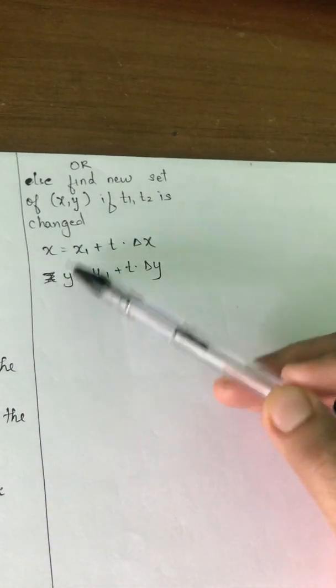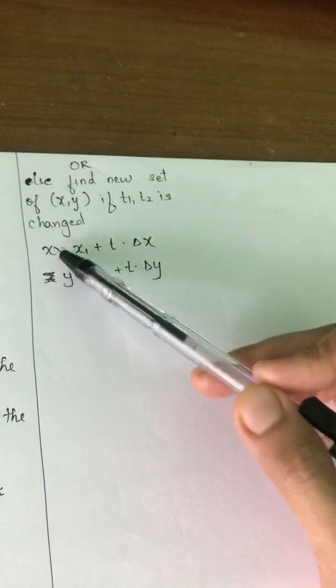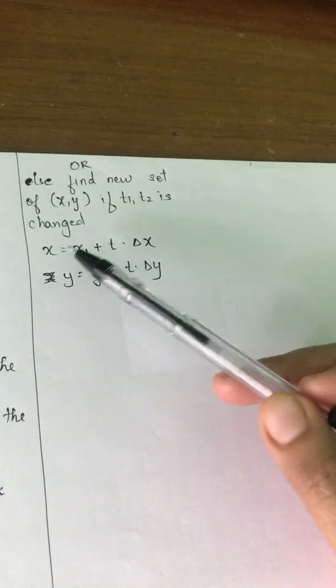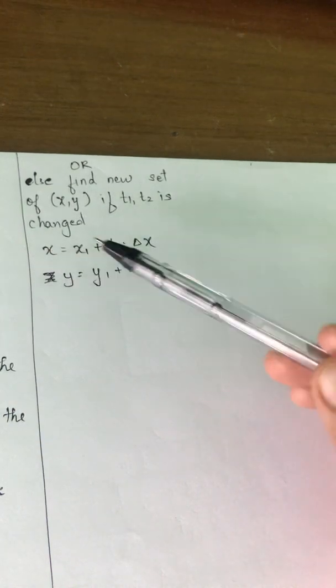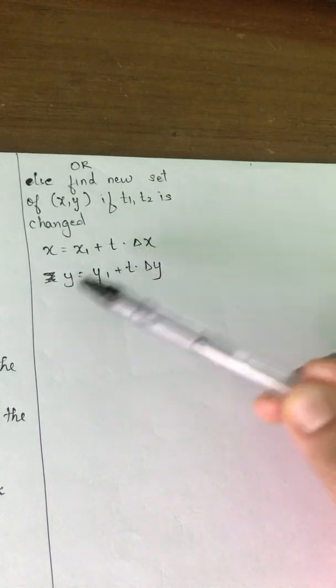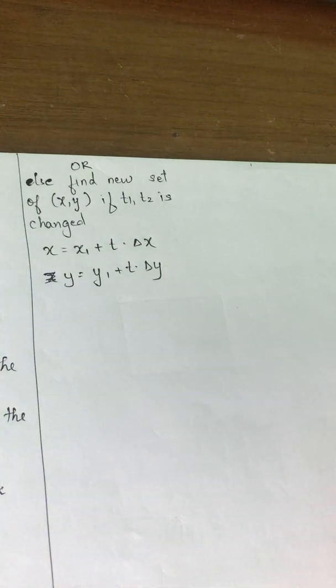Once that is done, you have to calculate—now in order to find this, there is a formula given which is also there in our derivation which we have seen in the previous video. x is x1 plus t times delta x, and y is y1 plus t times delta y.